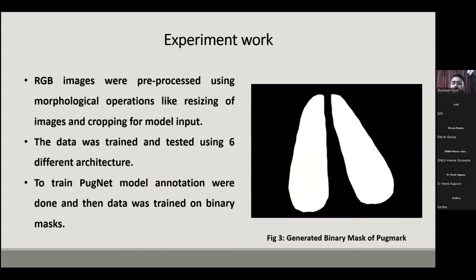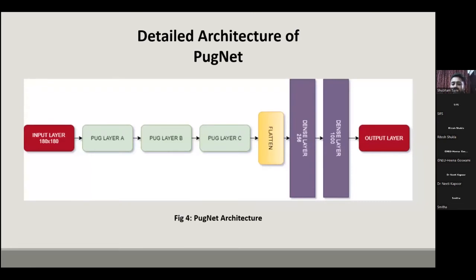To train the PugNet model, annotations were done and data was trained on a binary mask. Two experiments were conducted: one using red color images with six different architectures, and another using PugNet trained on binary mask data. The detailed PugNet architecture takes an input layer of 180 by 180 size.